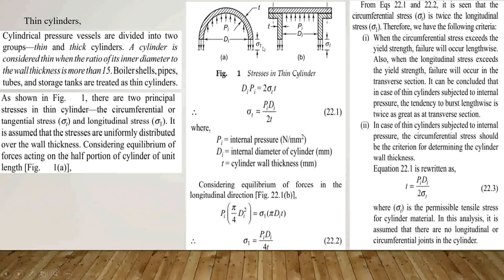In figure number 1, there are two figures, A and B. In figure A, there is the half portion of the cylinder of unit length. Considering the equilibrium of forces acting on the half portion of the cylinder of unit length: inner diameter di times pressure pi equals 2 sigma-t times t, where t is the wall thickness. Therefore, sigma-t equals pi times di divided by 2t, where pi is the internal pressure in newton per mm², di is the internal diameter in mm, and t is the cylinder wall thickness in mm.